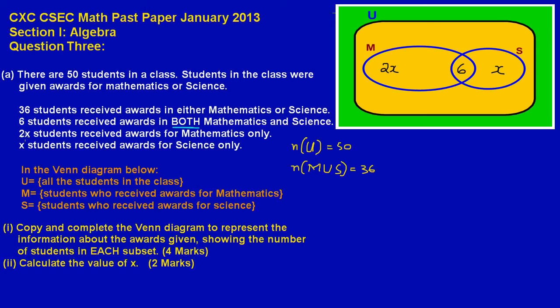Now simply put my friends, because they use the word only, 2x students receive awards for mathematics only, it simply means that all of this set here M which includes the intersect is mathematics. But because they use the word only they are not speaking about the intersection, they are excluding the intersection. So they're only speaking about this area here that I'm shading in white. This area represents the total number of students who got awards in mathematics only. And likewise for science, they said that x students receive awards for science only, so they are not speaking about the entire set for science which includes the intersection. They are only speaking about this section there since they have used the word only that I'm shading in blue.